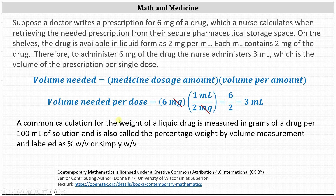A common calculation for the weight of a liquid drug is measured in grams of a drug per 100 milliliters of solution, also called the percentage weight by volume measurement and labeled as percent W/V, or simply W/V.